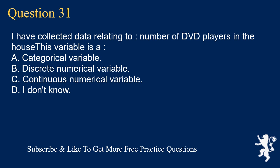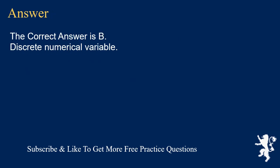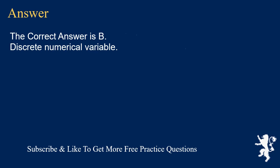Question 31: I have collected data relating to the number of DVD players in the house. This variable is A. a categorical variable, B. discrete numerical variable, C. continuous numerical variable, D. I don't know. The correct answer is B, discrete numerical variable.